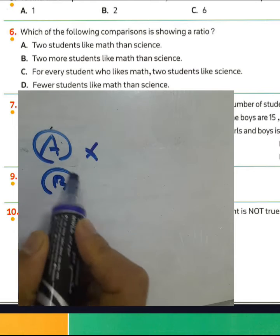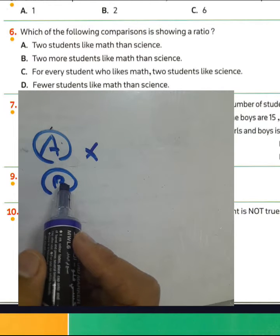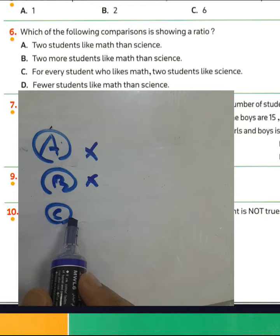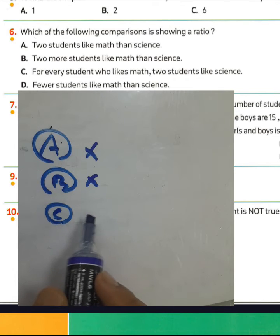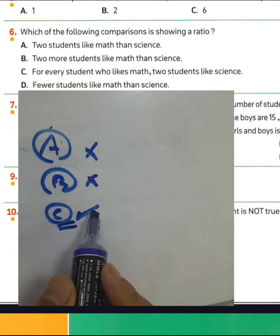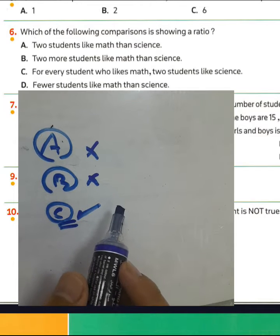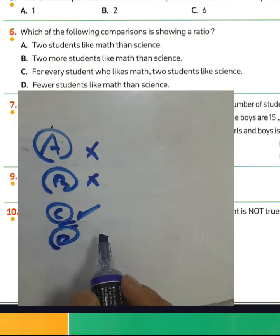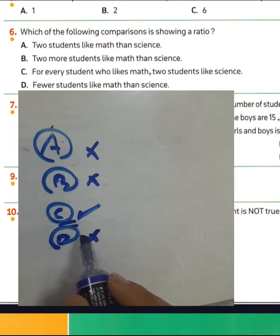Letter B says 'two more students like math than science' — that is not a ratio either. We want to find the ratio, which is comparing between two quantities with the same units, such as letter C: for every student who likes math, two students like science. Letter D says 'fewer students like math than science' — no. We want to find the ratio between two numbers, such as letter C.